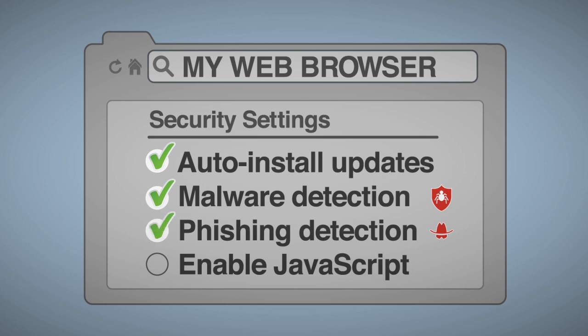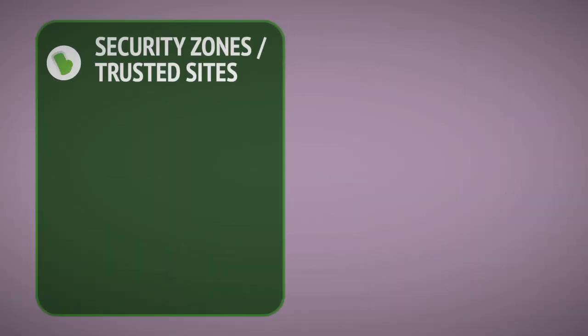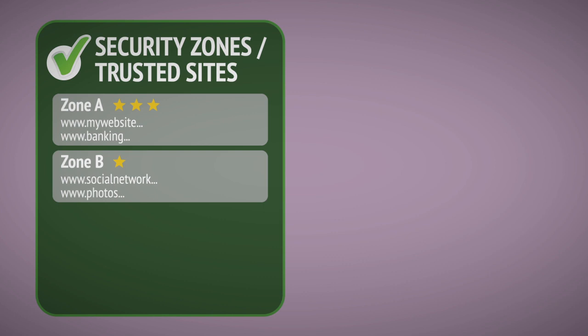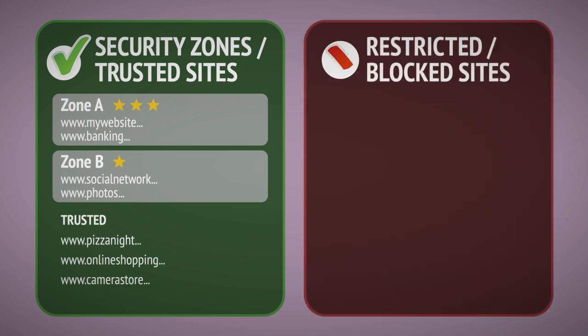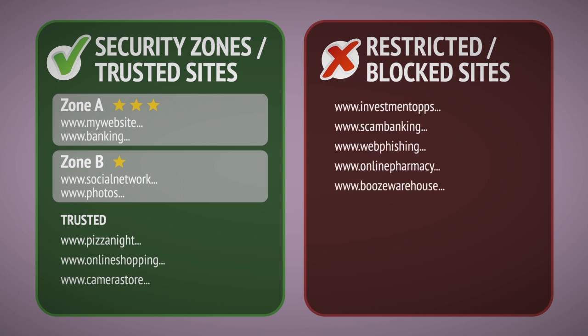You may want to consider disabling JavaScript due to past vulnerabilities and only use it for sites you trust. Some browsers allow you to set up security zones or lists of trusted sites, or alternatively specific sites you wish to restrict or block. Take some time to set these up to your own preference.